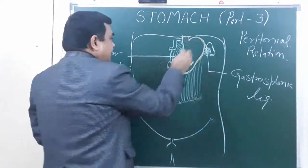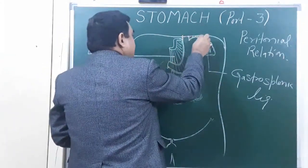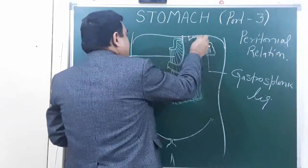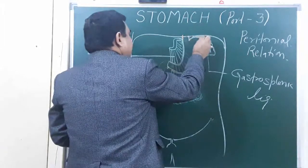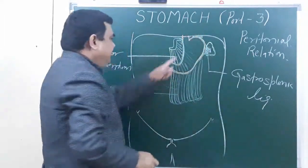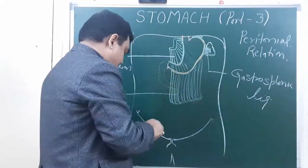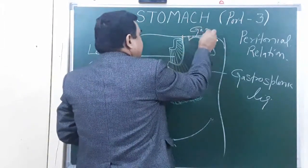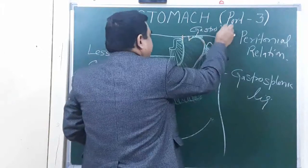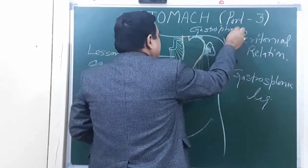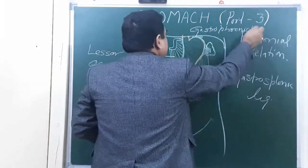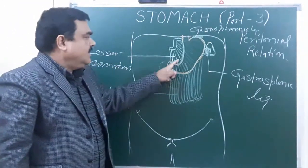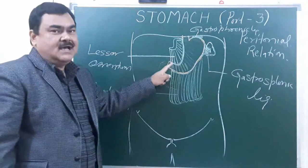At the upper part, the peritoneum reflects and attaches onto the diaphragm, forming the gastrophrenic ligament.